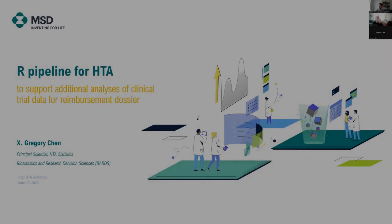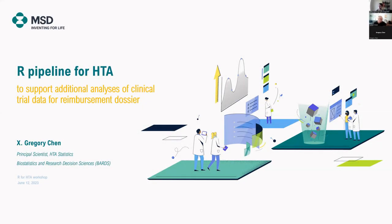Thanks for the opportunity to present here today. My name is Gregory Chen from MSD, located in Zurich, working in a team of about 50 HTA statisticians. The umbrella statistical organization in MSD research laboratory is called Biostatistics and Research Decision Sciences, abbreviated internally as BATS.